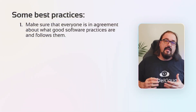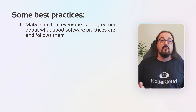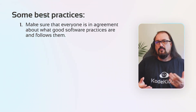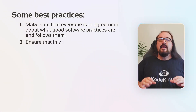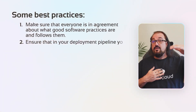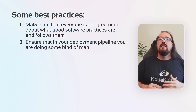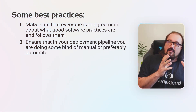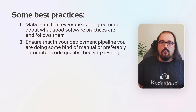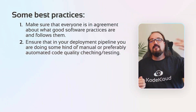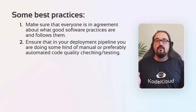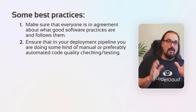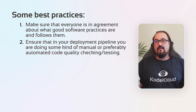Ensure that in your development pipeline, in addition to good coding practices and standards, you have some kind of manual or automated code quality checking. Either get a senior developer to mentor, pair program, or mob program with the juniors, or run their code through a bevy of the evolving machine learning-based tools that are getting better and better every year.